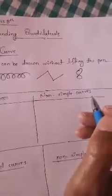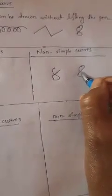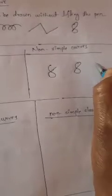This figure 8 is also a curve. Now, simple curves and non-simple curves. Anything that we can draw and when we do not cross it, it is called a simple curve. If we draw something that crosses itself, it is not a simple curve. Like we draw an 8 — it crosses itself, so it is not a simple curve. A star also crosses itself, so it is not a simple curve.